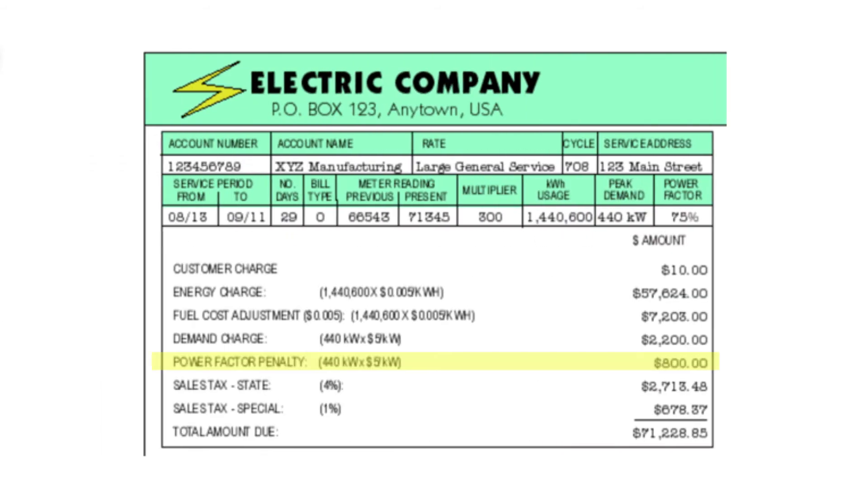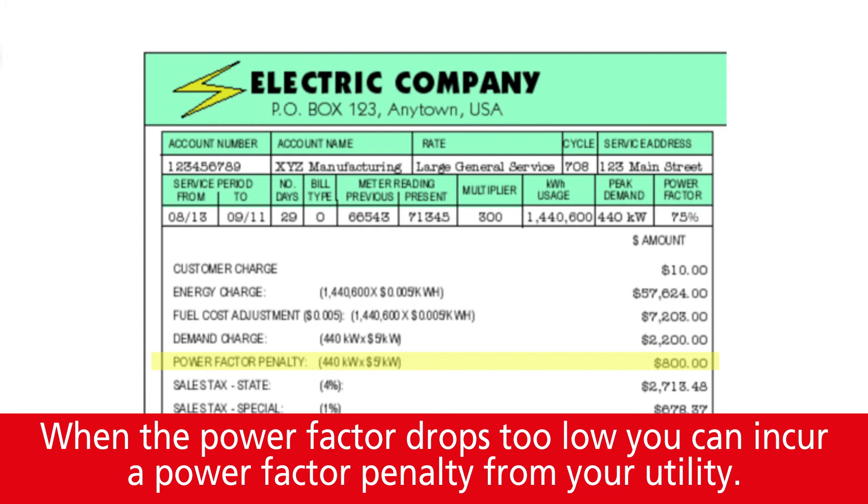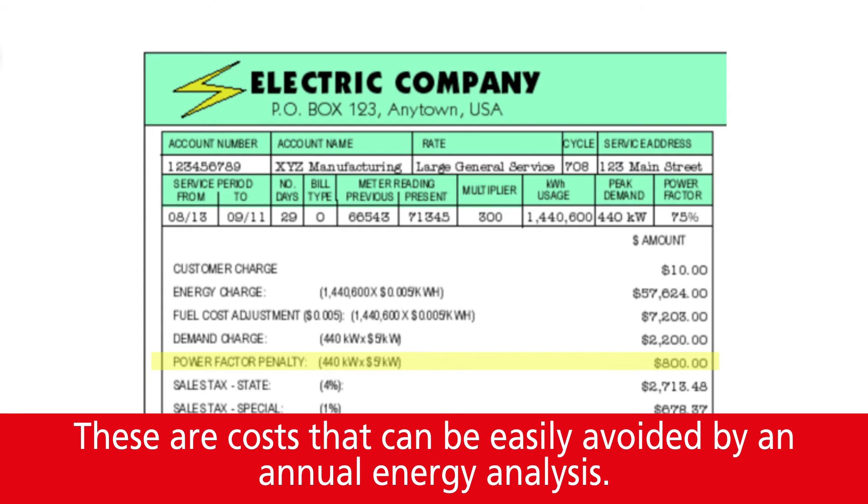Power factor penalties. When equipment is starting up, it will often add an inductive load to the system. This will cause phase shifts that will lower the power factor. When the power factor drops too low, you can incur power factor penalties from your utility. These are costs that can be easily avoided by annual energy analysis.